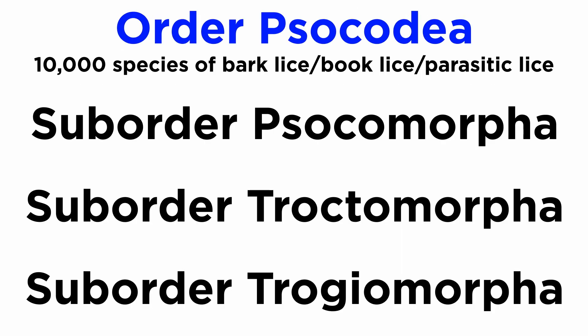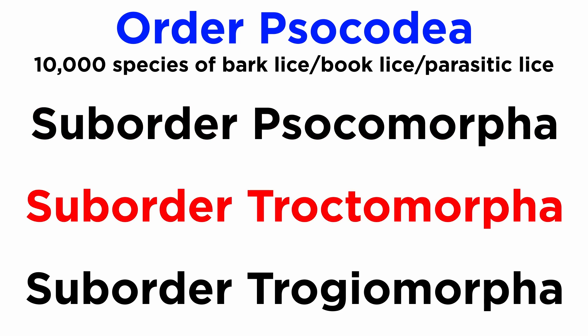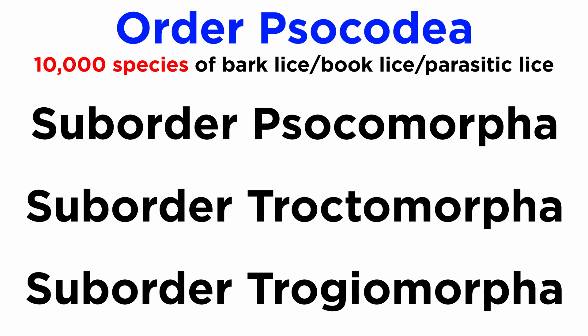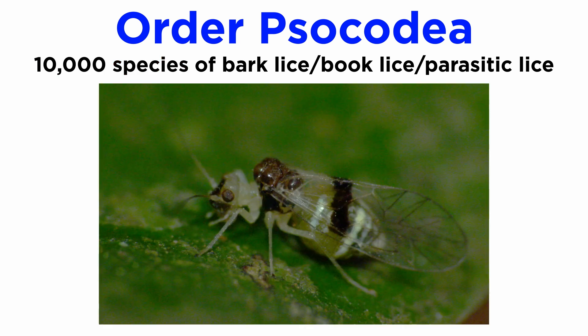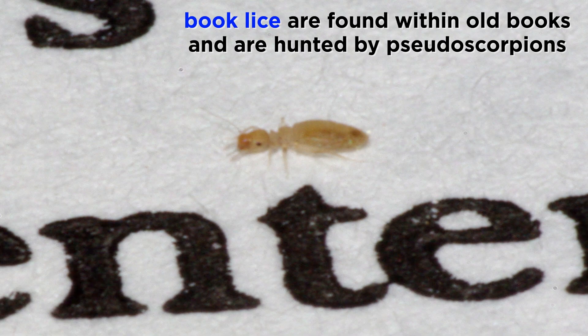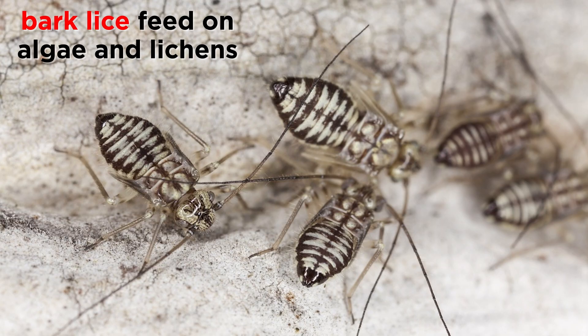Order Psocodea contains three suborders — Psocomorpha, Troctomorpha, and Trogiomorpha — and more than 10,000 species. Members of this order include the Bark Lice, Book Lice, and Parasitic Lice. Species known as Book Lice are so named because they are commonly found within old books, where they feed upon the binding paste and are hunted by pseudoscorpions. The Bark Lice are common upon the bark of trees, where they feed upon algae and lichens.